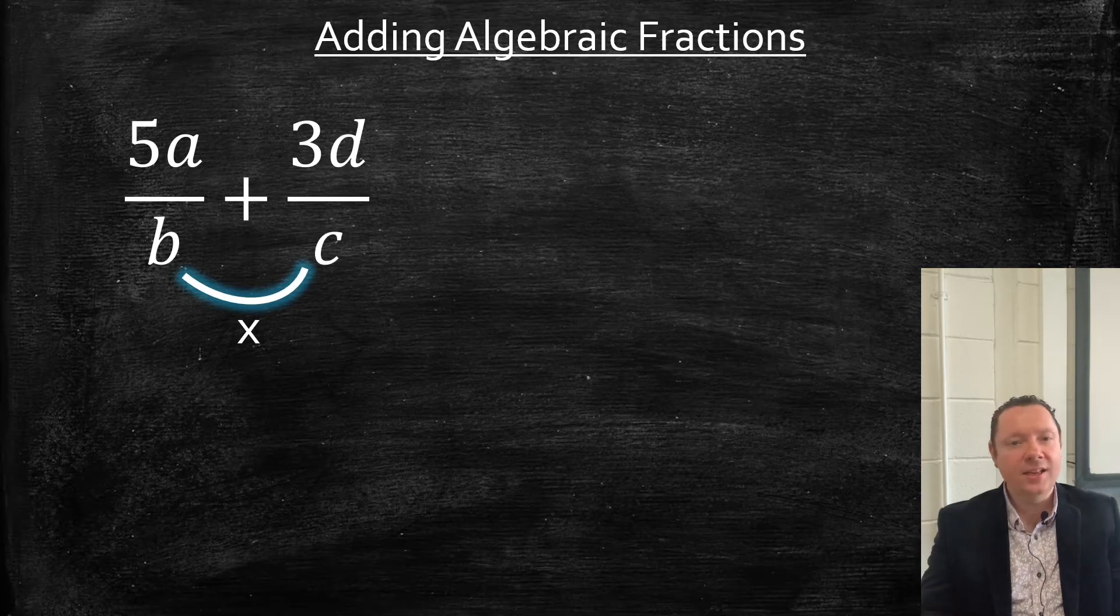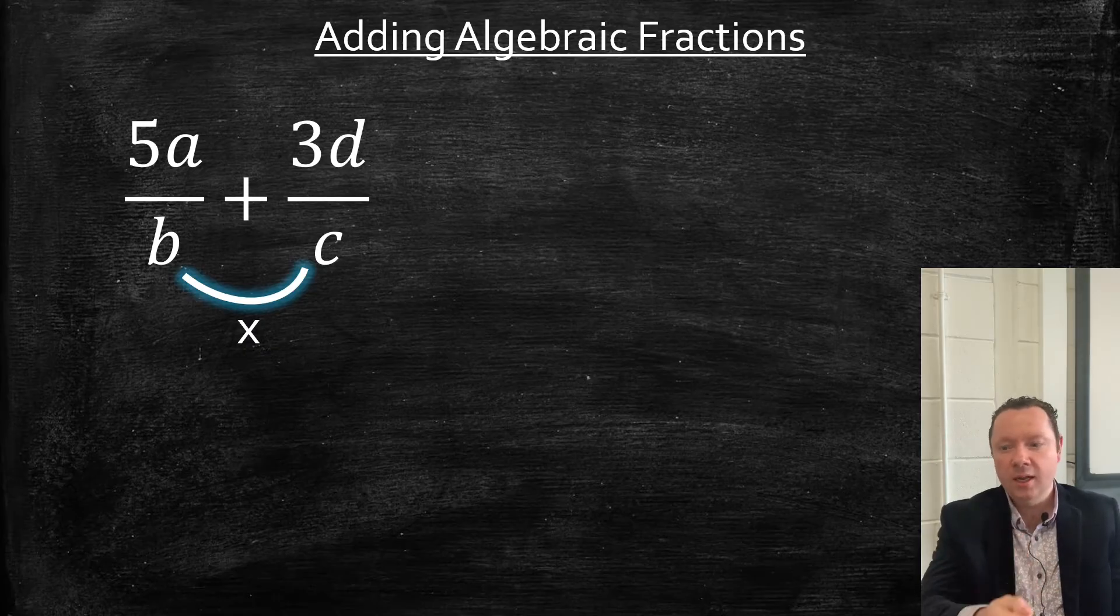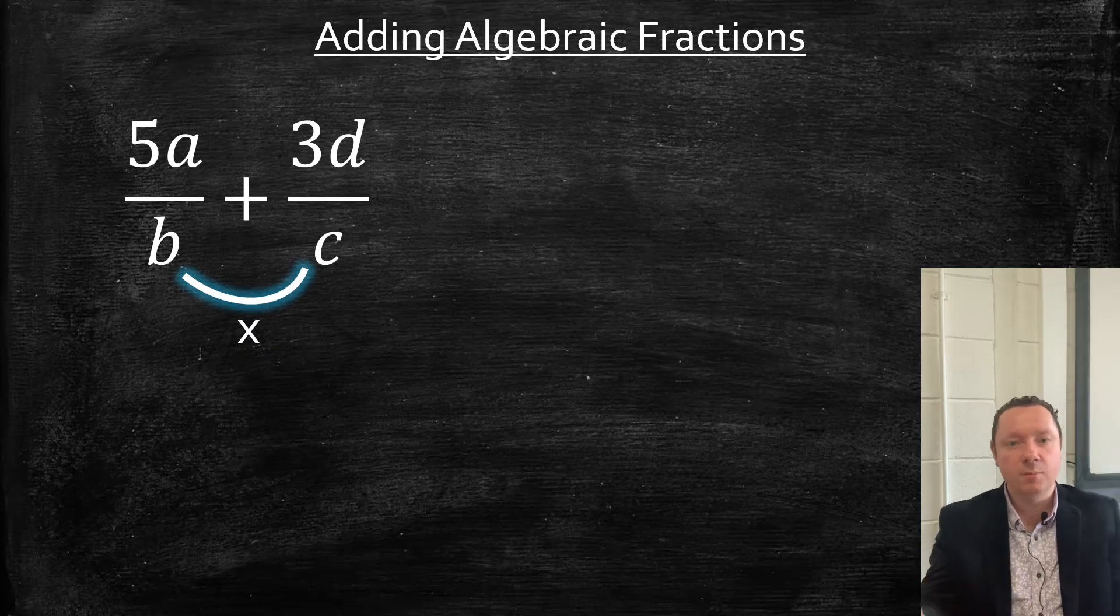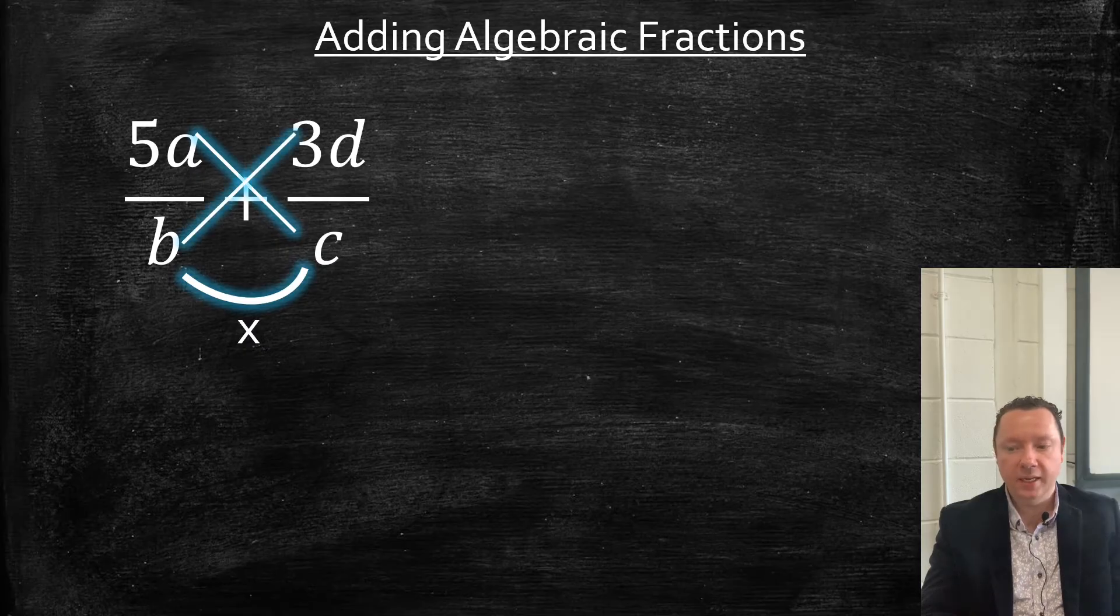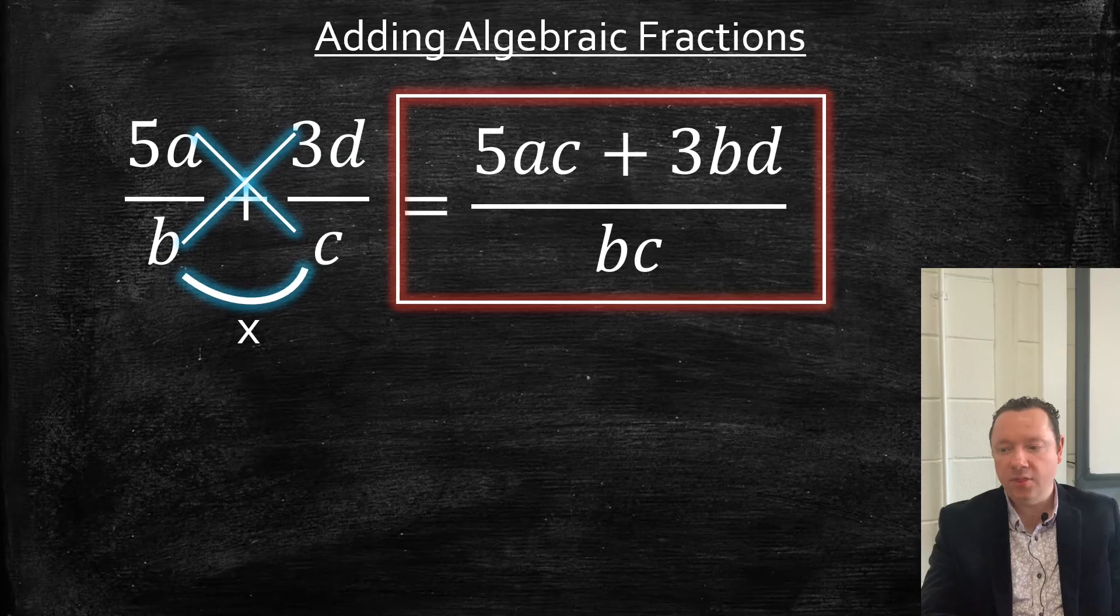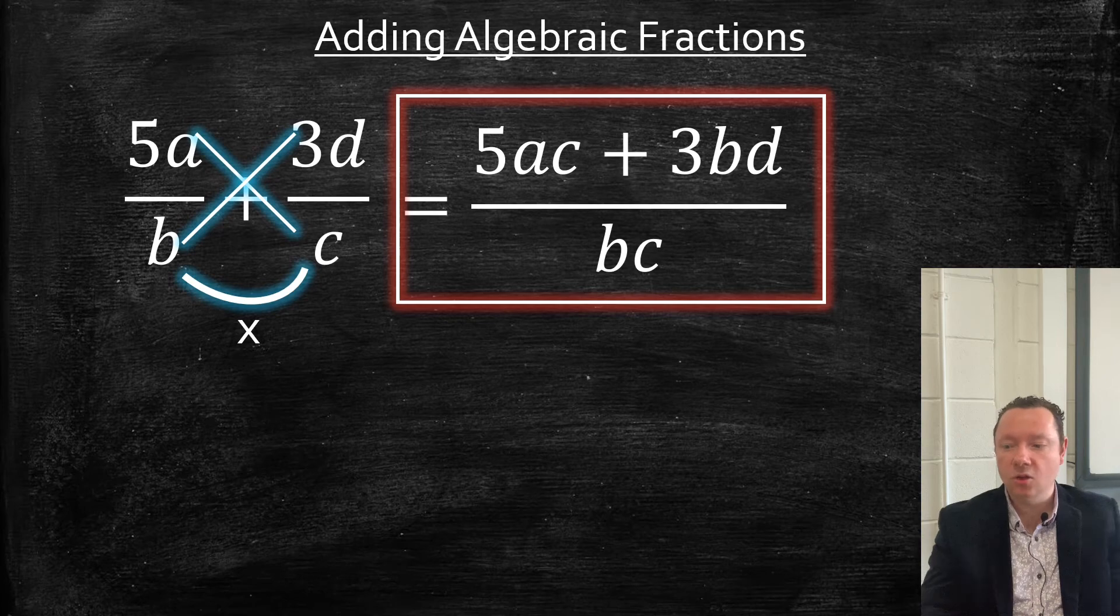And then you can think of this like a cross as a simple way to do it. Really, you're times the first fraction by c and the second fraction by b. So that means that you're getting 5a times c and 3d times b. Putting that together on the top then, you've got 5ac + 3db or bd over bc. And you cannot simplify that because there's not a common thing across everything. So we're done.